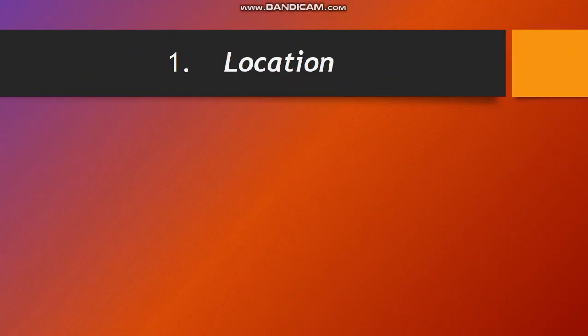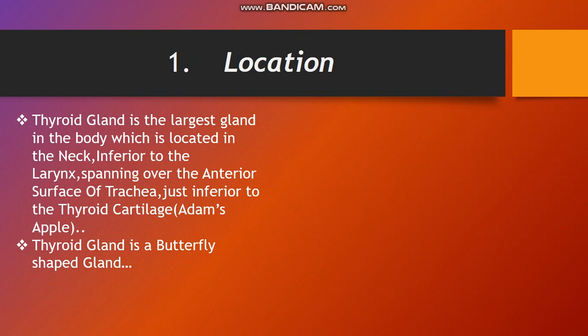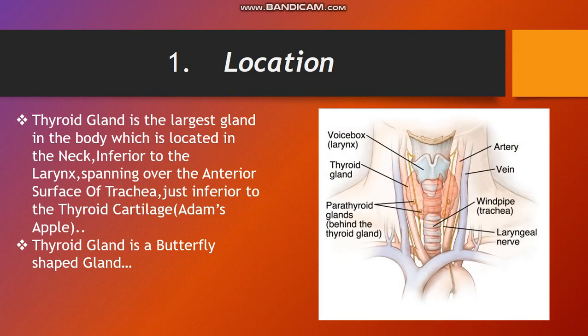Location: the thyroid gland is the largest endocrine gland in the neck, located inferior to the larynx, spanning over the anterior surface of the trachea, just inferior to the thyroid cartilage — also known as the Adam's apple. It is a butterfly-shaped gland. The parathyroid glands are embedded on the posterior aspect, behind the thyroid gland, along with the artery, vein, and laryngeal nerve.